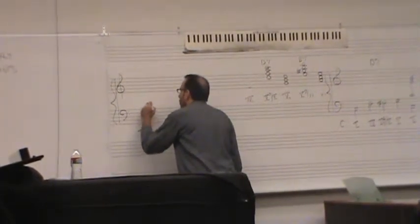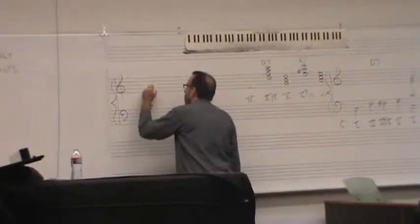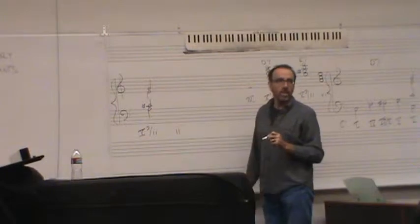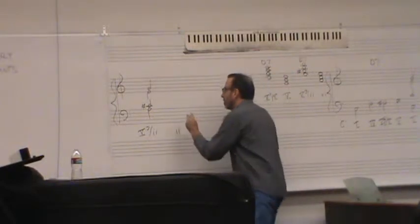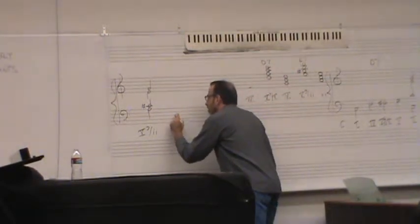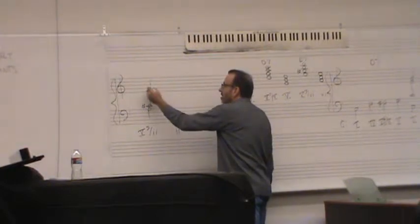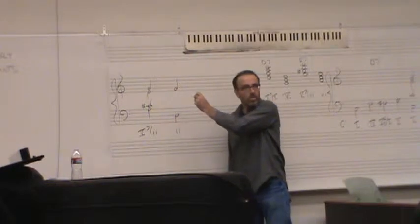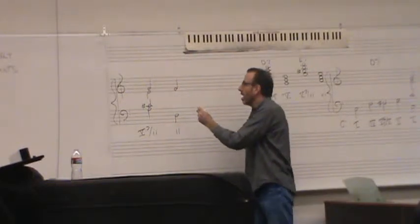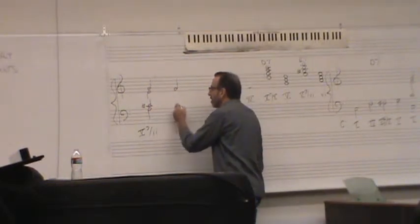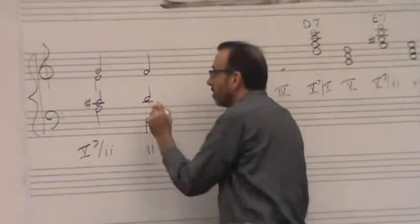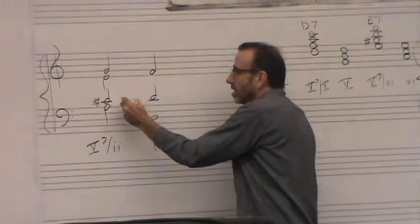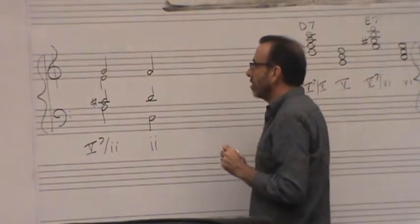So let's say this is the way I voiced it. That's my V7 of ii, that's an A dominant 7th. I'm going to a D minor chord. Then I still have to have the 7th resolved down by step to the 3rd of the next chord. And I still want to try and have the leading tone resolved up to the quote-unquote tonic, the temporary tonic. So that leading tone resolution should be there also.